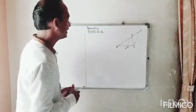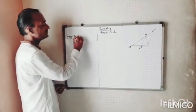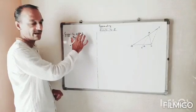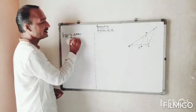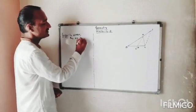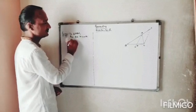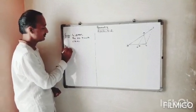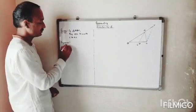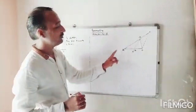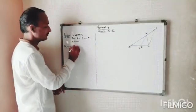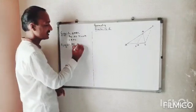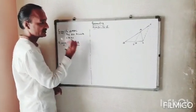In triangle ABC, ray AD bisects angle BAC. What I have to prove is that it bisects the side opposite to it. The side opposite to angle A is BC. So I have to prove that BD upon DC equals the ratio of the remaining two sides — that is AB upon AC. For this I need a construction.